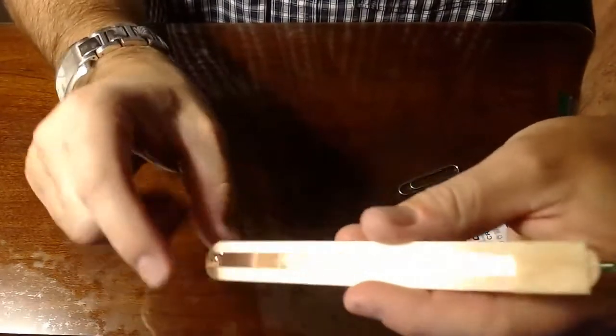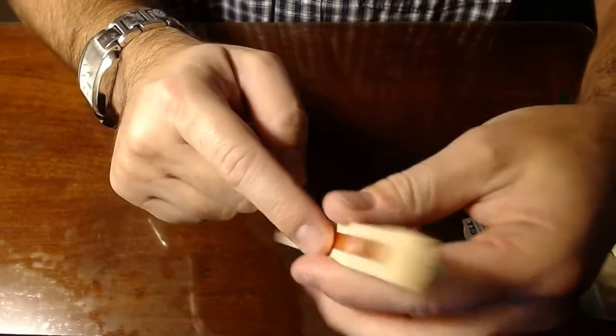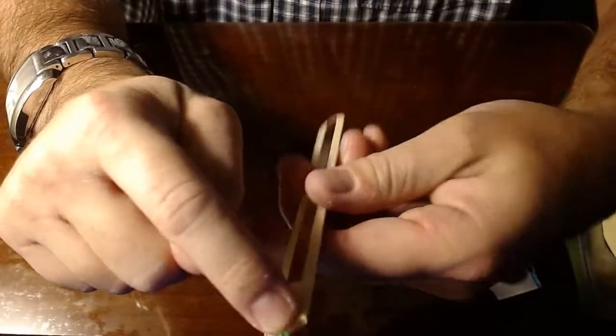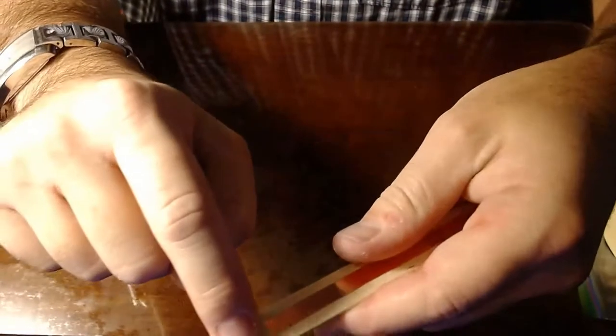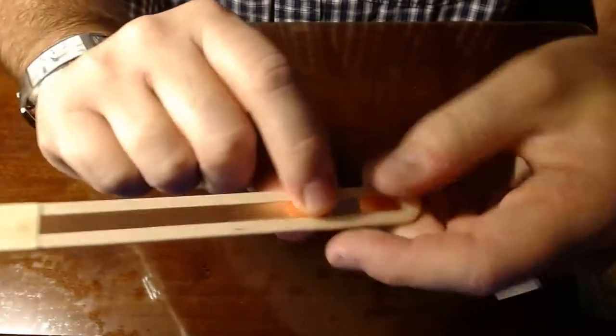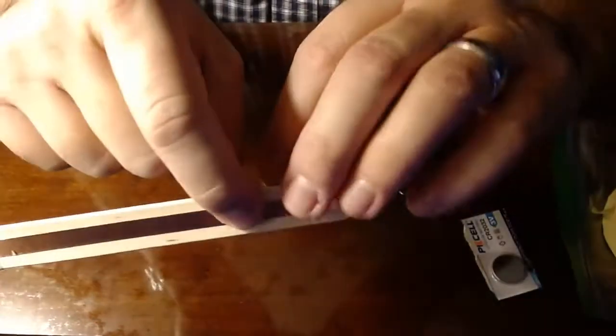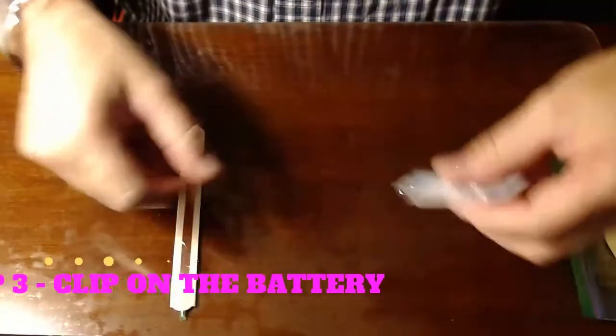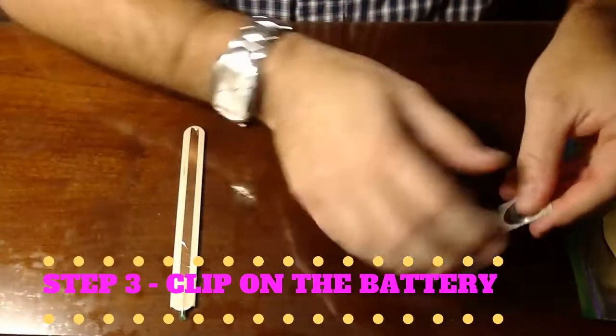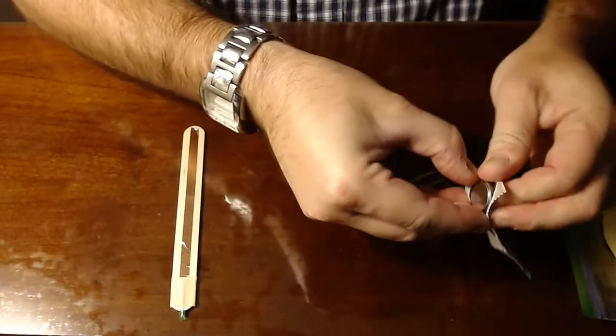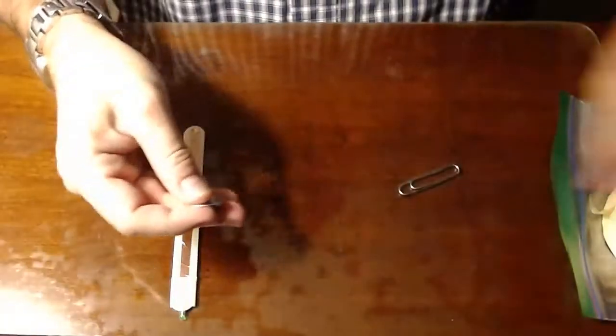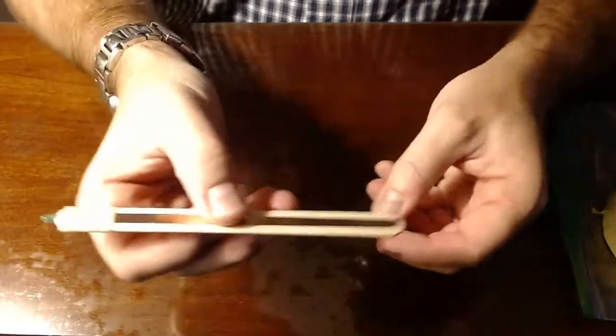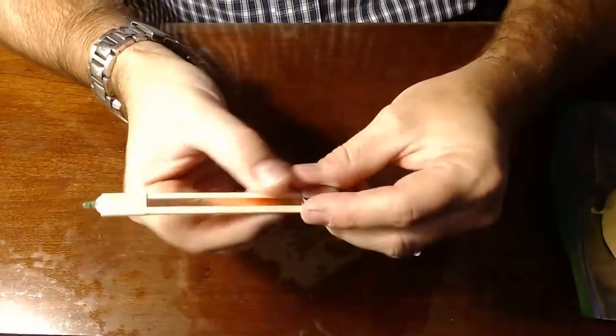So what will happen is the electricity will flow up one side, touch that middle rod, and come around to our other side and back down. But how does it complete the loop and go back over to the other side? Well, now it's time for that battery. So let's take that battery out and that battery gets placed on there.